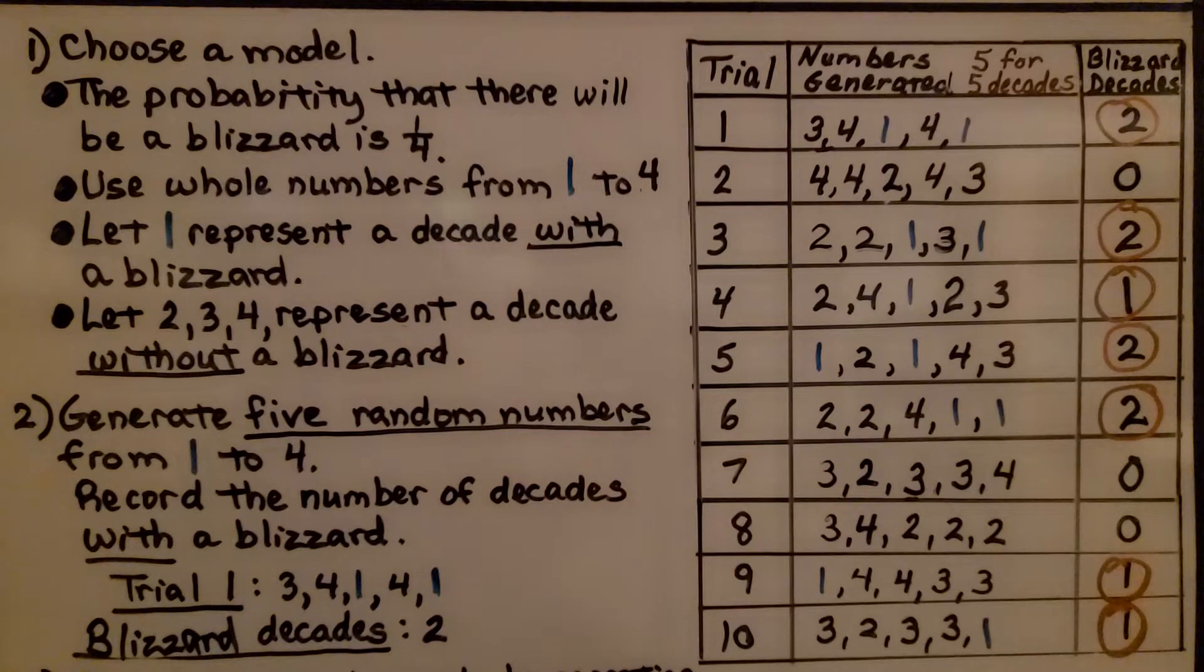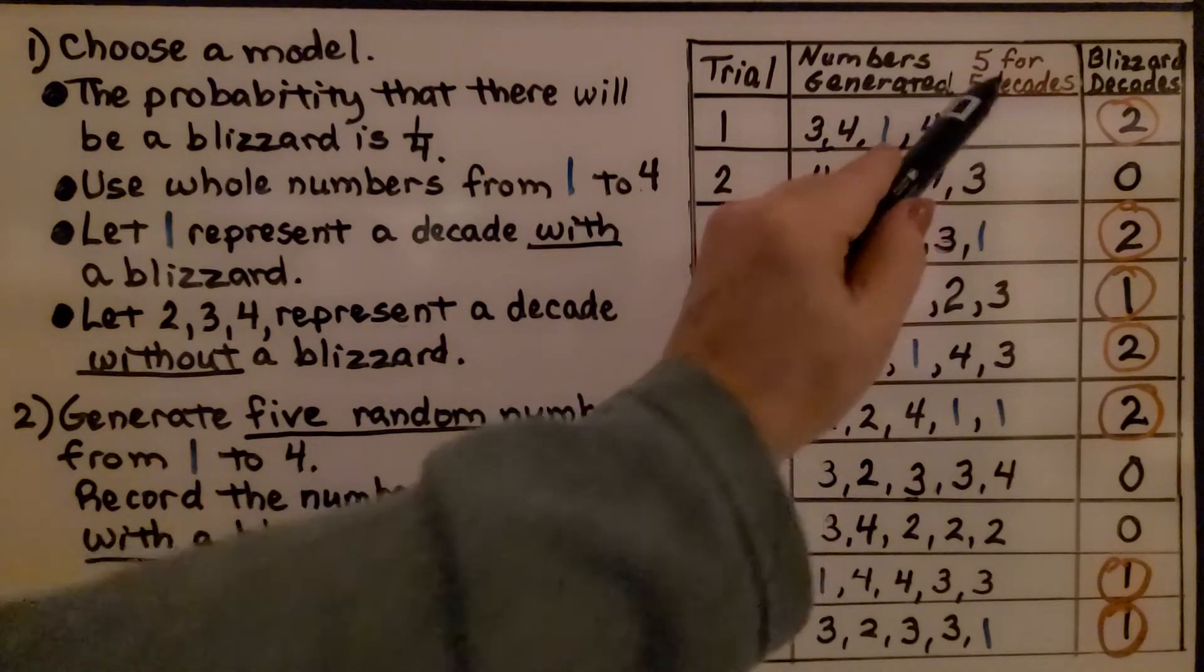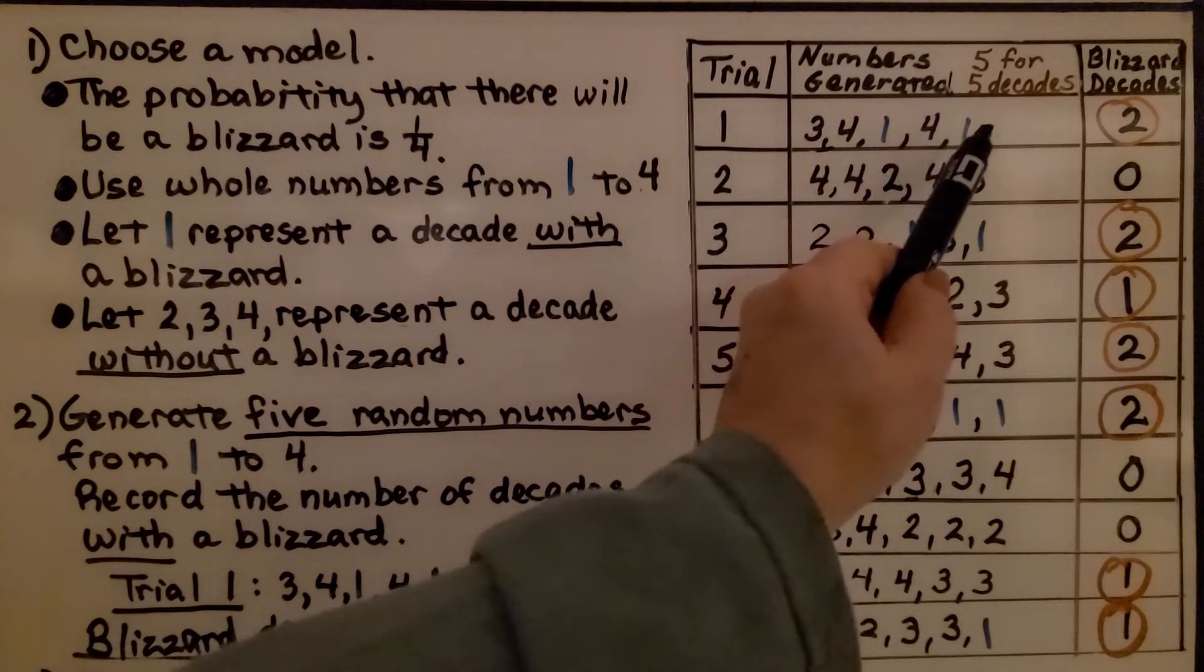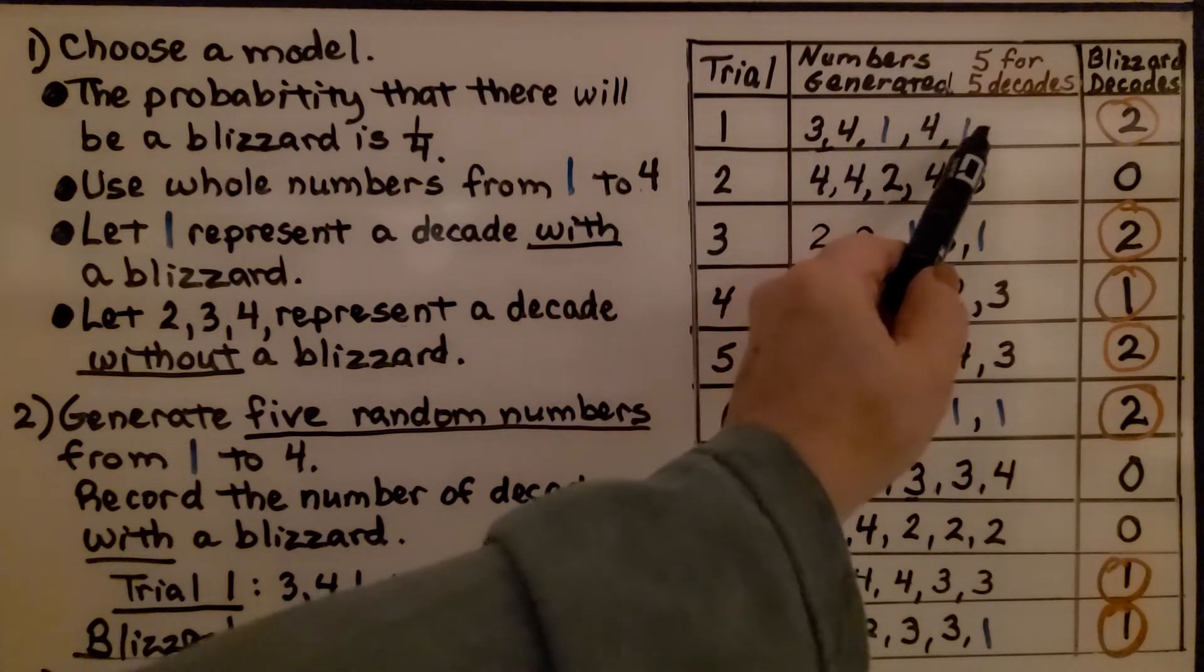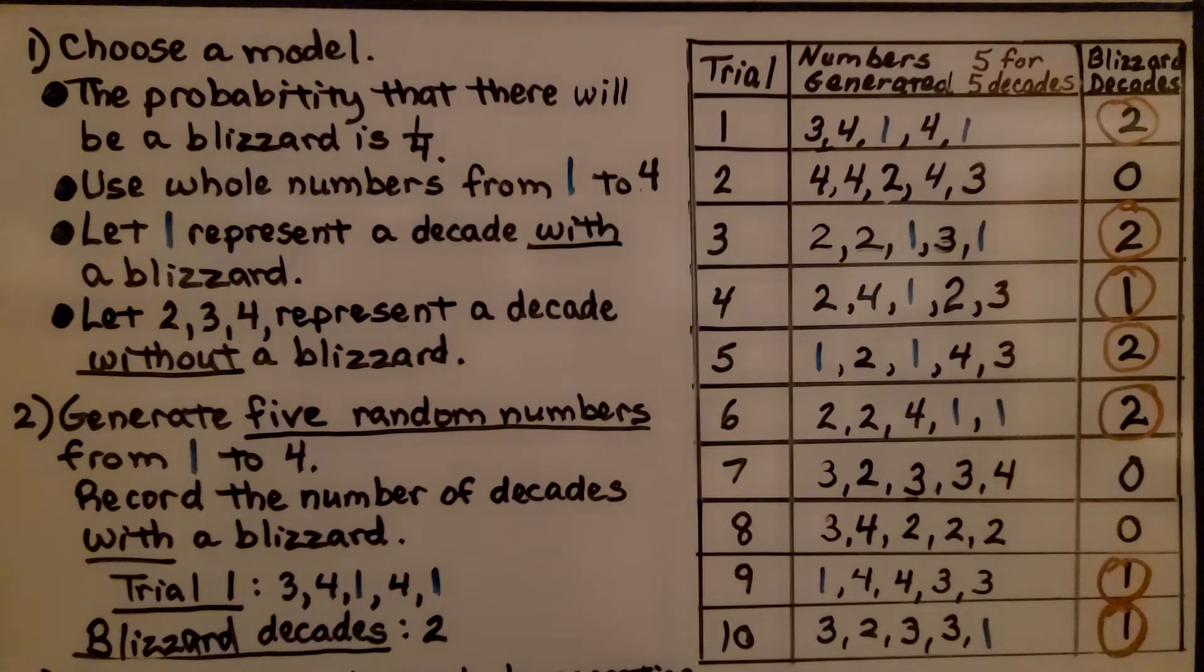We generate five random numbers from one to four. We're doing five random numbers in each trial for the five decades. We record the number of decades with a blizzard. In my first trial, on my calculator, I got a three, four, one, four, one. That means, for the blizzard decades, I got a two. So, that's a blizzard, and that's a blizzard. That's two blizzard decades out of the five.